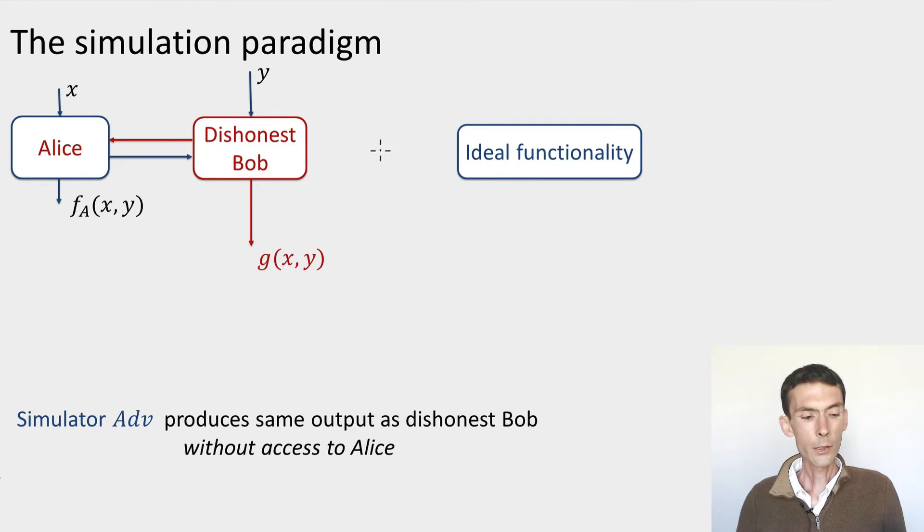So the way we formulate security is like this. We imagined that the protocol is running with Alice, who is following the protocol honestly. This is why I put her in blue. And then there's a Bob who's dishonest, trying to extract some information about X. So this dishonest Bob has the input Y, but then is producing some output G of X, Y, which could be X for instance, if Bob is successful in being fully dishonest or some other property of X. And we'd like to say that this ought to be impossible. How do we formulate it?